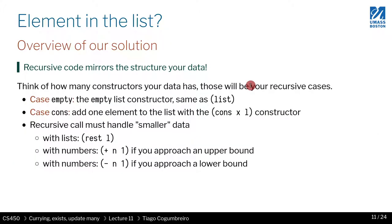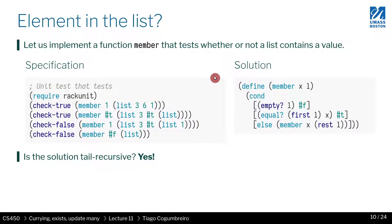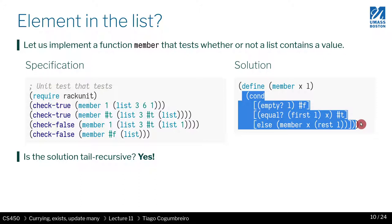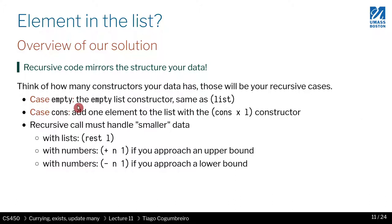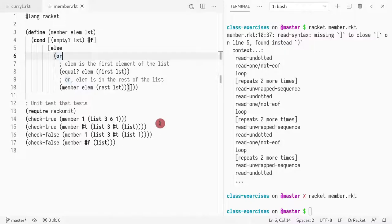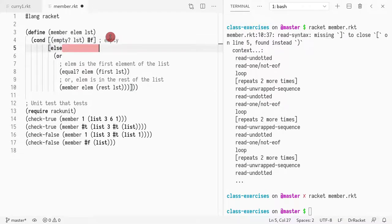Let's take a step back and think about how our recursive code mirrors the data we're manipulating. The code shape mirrors the data shape: you have cons and empty as the base case, meaning the code always has two branches — one for empty and one for cons. You'll have as many cases as you have constructors. In our solution we have two cases: one for the constructor empty and one for the constructor cons.